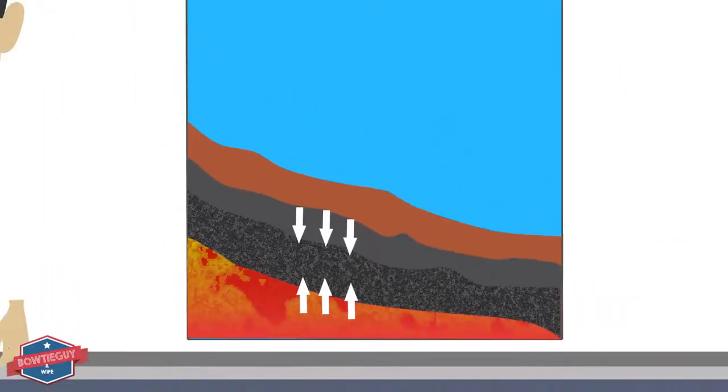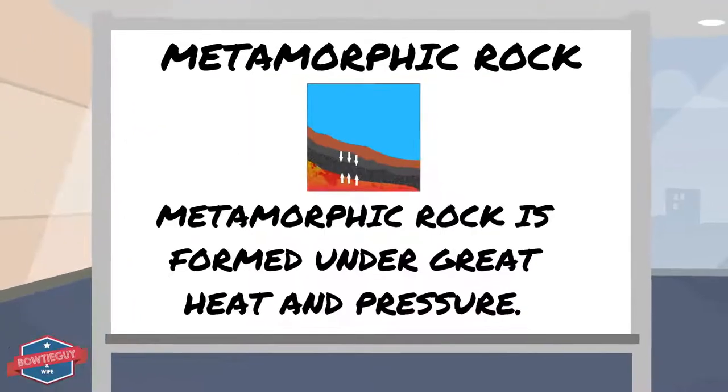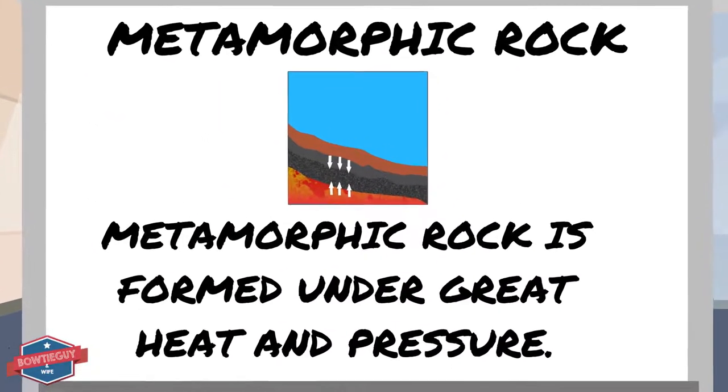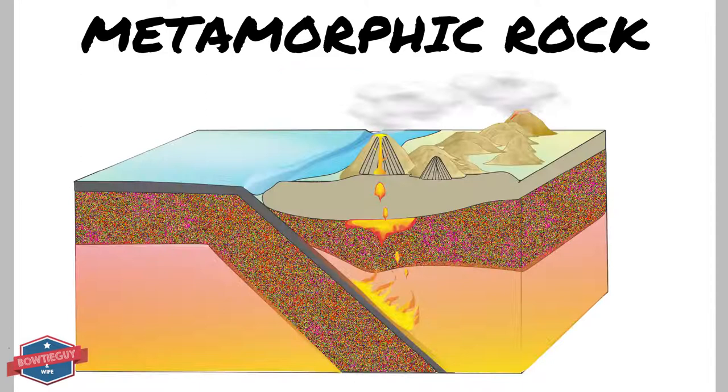What is metamorphic rock? Metamorphic rock is formed under great heat and pressure deep within the earth. There is immense heat and pressure within the earth's three layers.